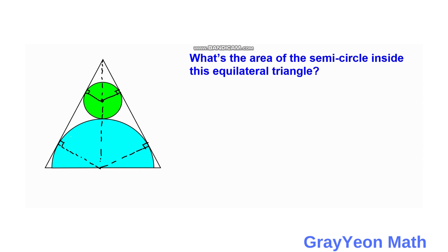Next, we label the radius of the small green circle as small letter r — this side is r, and this side is r as well. The big semicircle (the blue one) has radius capital R — this is capital R, and this is capital R.